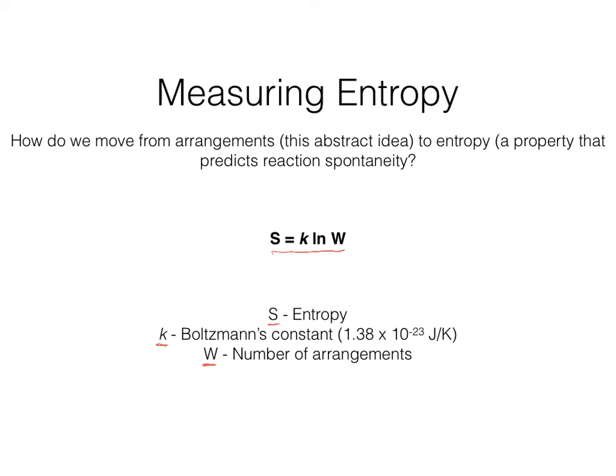With Boltzmann's constant, we can relate the number of ways my shoes go into a cubby to the inherent entropy that exists within that system. The good news is we are not going to do math with the Boltzmann equation — we're not going to count the number of arrangements or solve for the inherent entropy. In the next several videos, we're going to work through what entropy means and how we're going to use it to understand things like the spontaneity of a reaction.